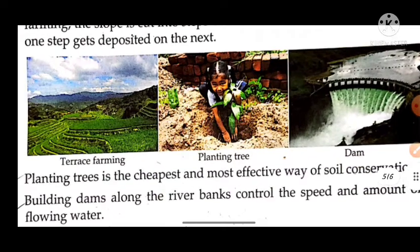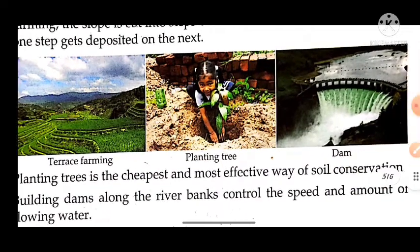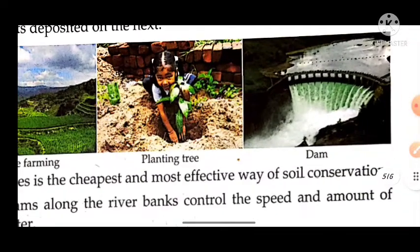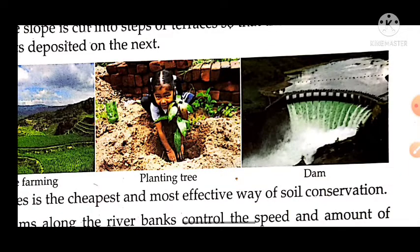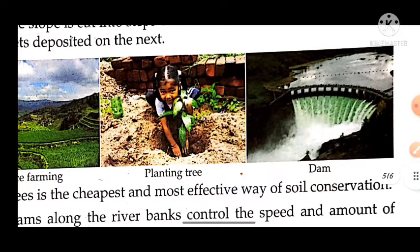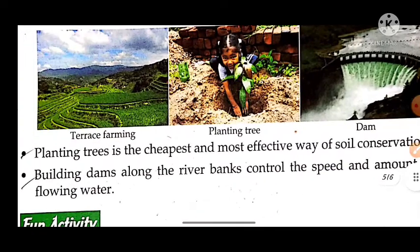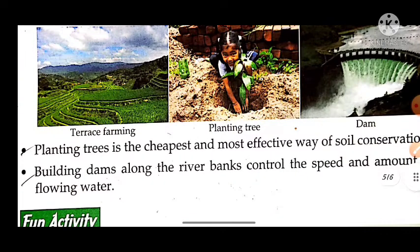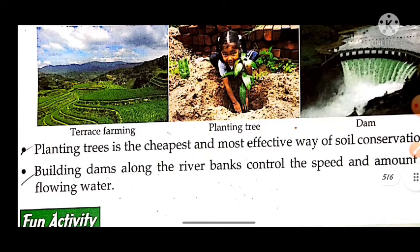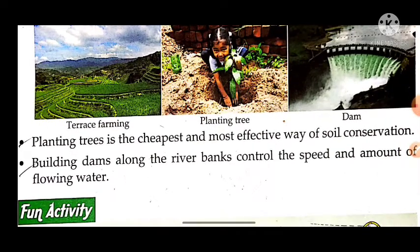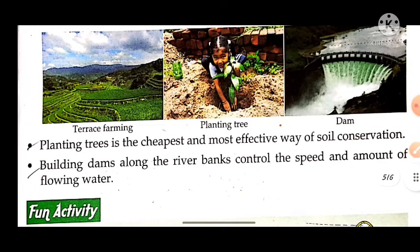The third method involves planting trees. The cheapest and most effective way of soil conservation is planting trees. The next method is building dams along the river banks to control the speed and amount of the flowing water.